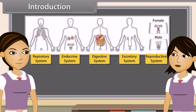Each system is specialized to do a specific function, such as nutrition, digestion, respiration, transport of materials, and excretion respectively. In each system, all the organs work together so that the whole system can work properly.